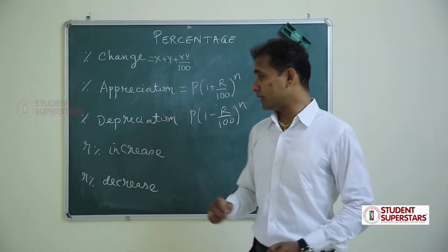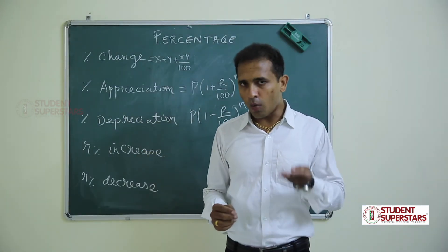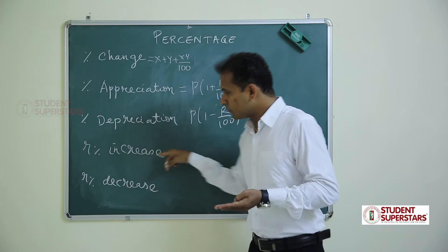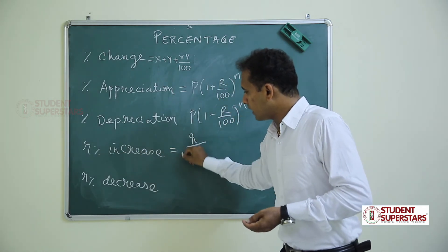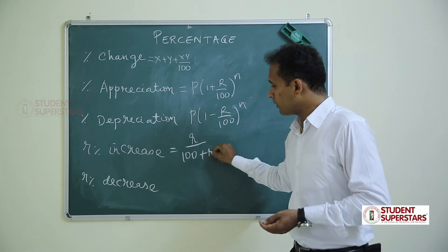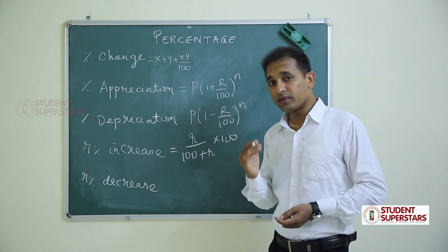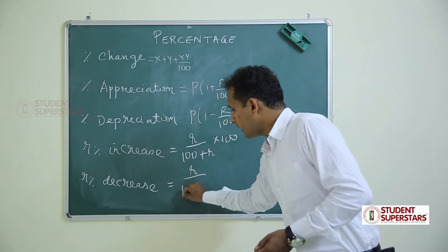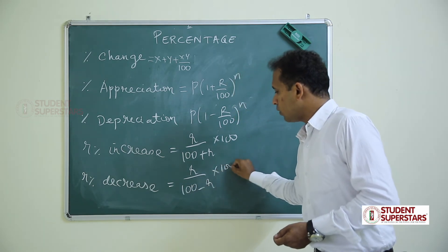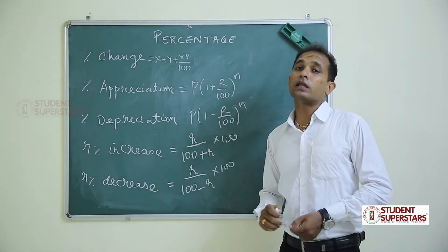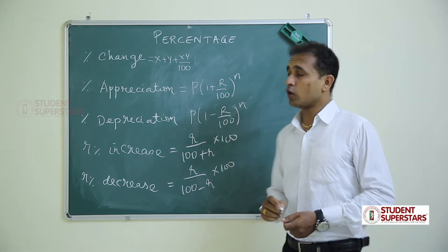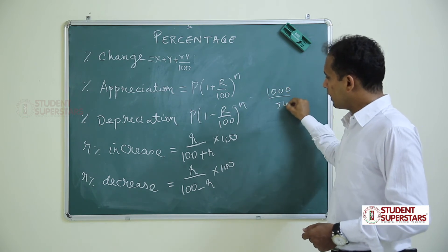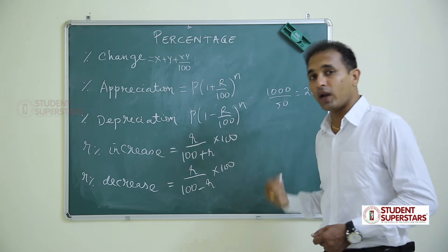The next formula: if the price of a commodity increases by r percent, by how much percent should consumption decrease to maintain the same expenditure? Formula: r / (100 + r) × 100. If price decreases by r percent: r / (100 − r) × 100. Example: a family spends 1000 rupees on rice; 1 kg costs 50 rupees, so they buy 20 kg per month.